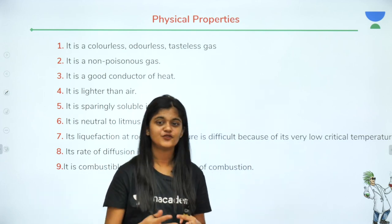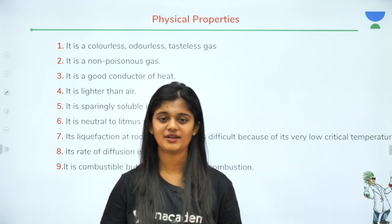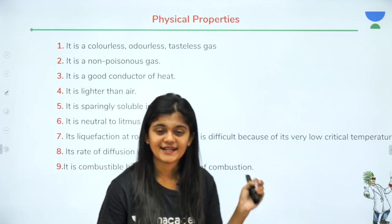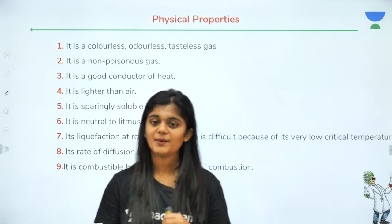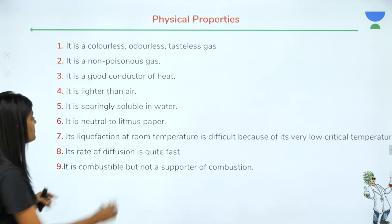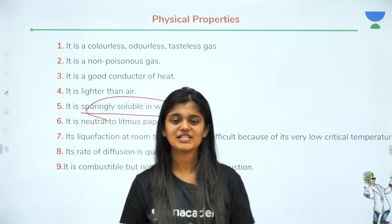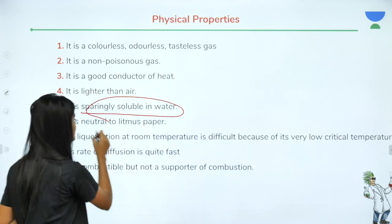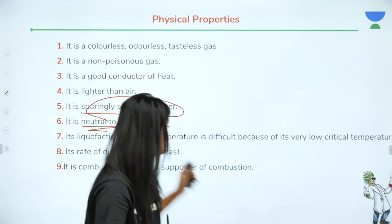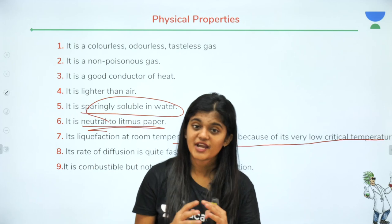Third: hydrogen is a very good conductor of heat. Fourth: it is lighter than air — its mass and density are comparatively low. Fifth: it is sparingly soluble in water — not completely dissolved. Sixth: it is neutral to litmus paper — it shows neither acidic nor basic nature. Seventh: its liquefaction is difficult because of its very low critical temperature.